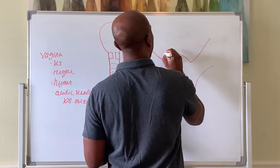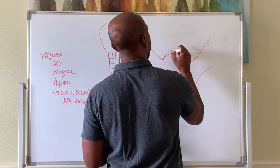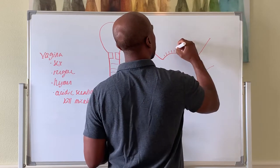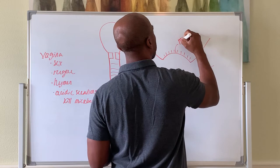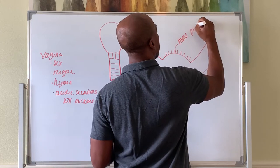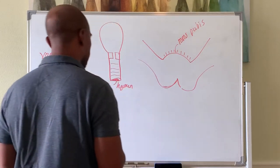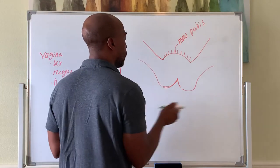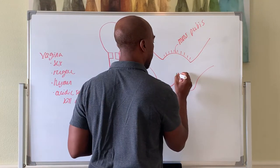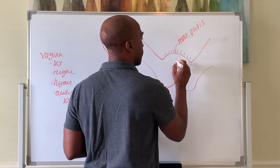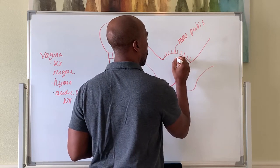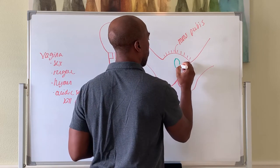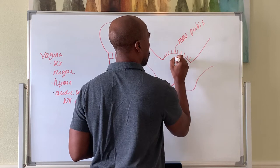This part here between the thighs, we have hair on it. This part is called the mons pubis. You have the anus right here, and you have folds here called the labias.